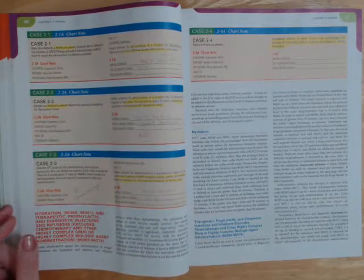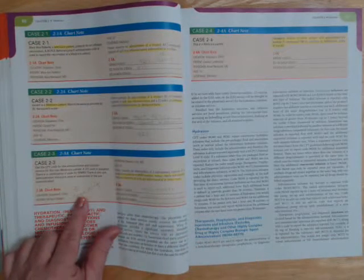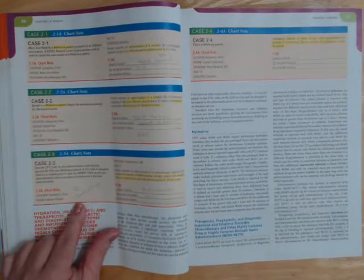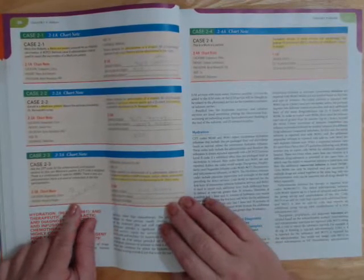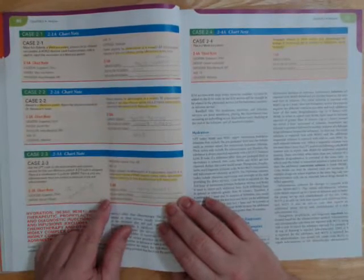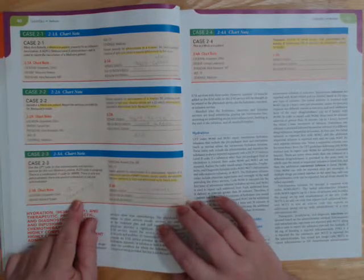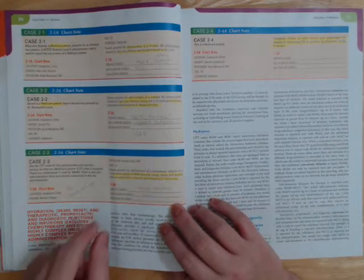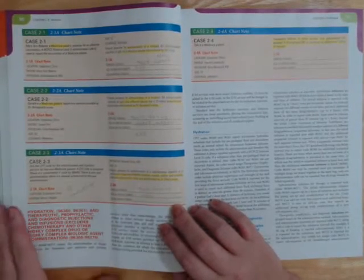Case 2-3: This is a 10-year-old getting regular vaccinations for their age. There's no documentation of counseling, so the MMRV will have one administration code with no components.